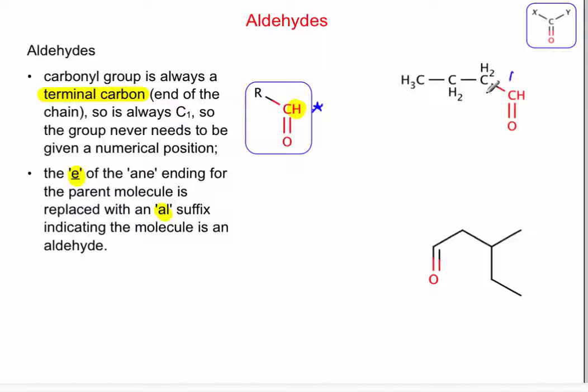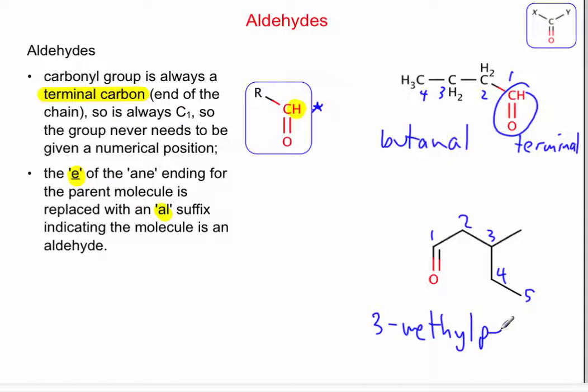So here's an example. One, two, three, four carbons. Notice the functional group is terminal, so that identifies it as an aldehyde, and this would be called butanal. And notice I do not have the indication of that branch because it's always going to be carbon 1. Here's another one. So there's my functional group, my aldehyde group, and that's carbon 1, 2, 3, 4, 5. So it's a pentanal, and on carbon 3 I have this methyl group, so it's going to be 3-methylpentanal. Notice I do not need a number because it's always carbon 1 for an aldehyde.